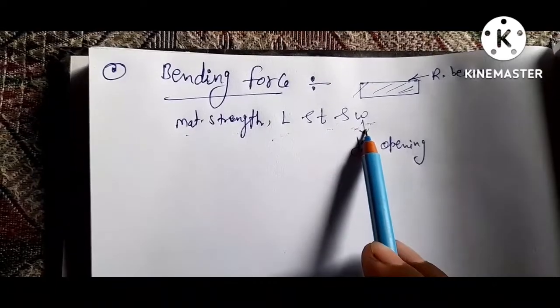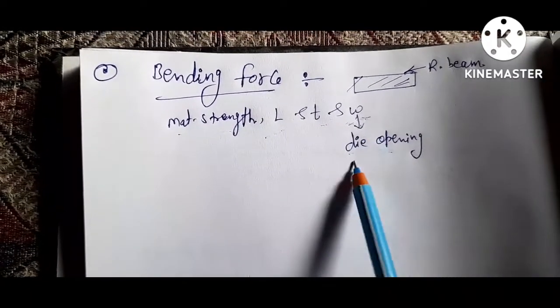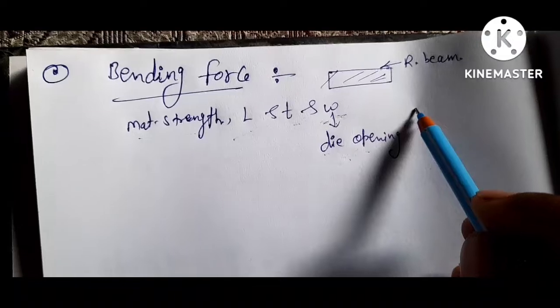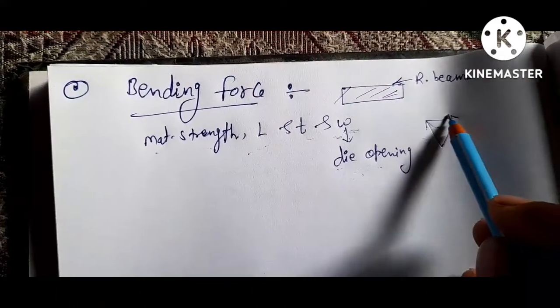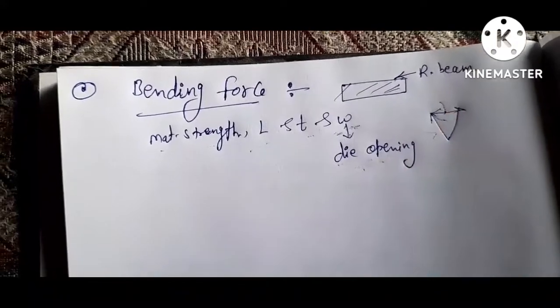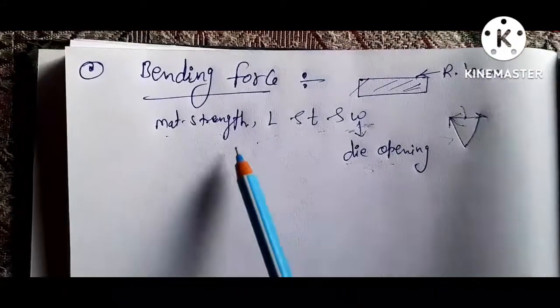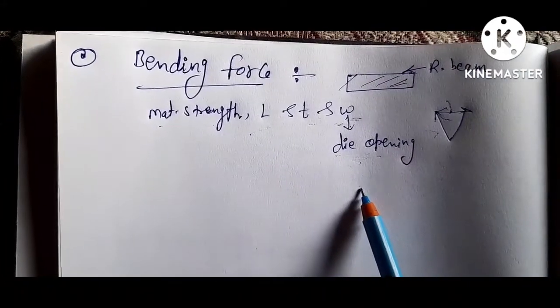W is die opening width. Like if you use V die, then this is V die and this is the width of die opening. Bending force also depends on friction.